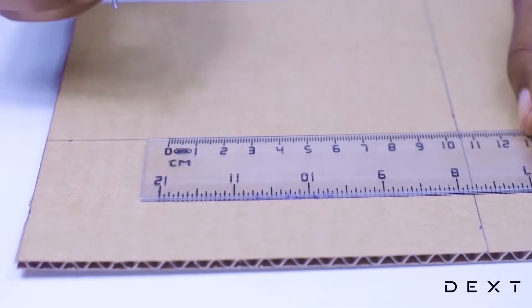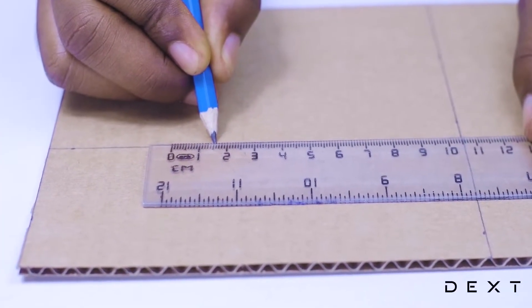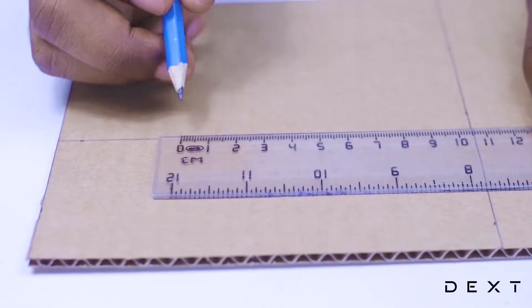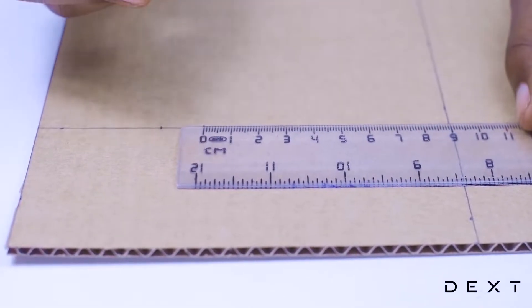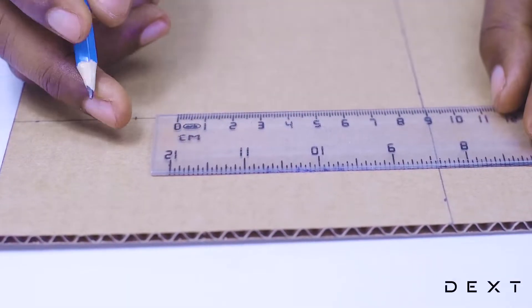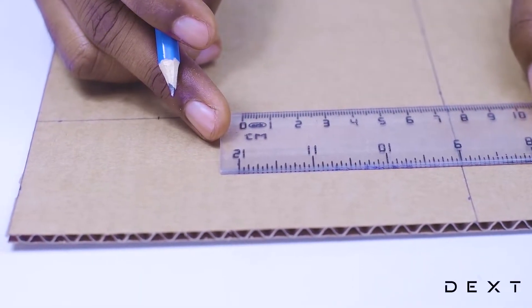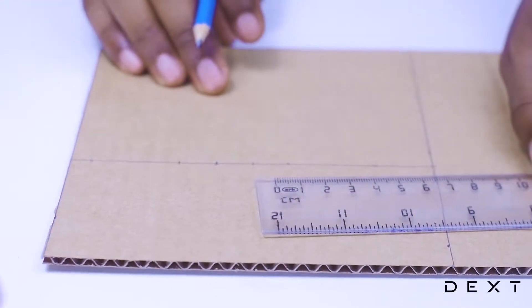After that 4.5 cm, from that point, we will measure 1.5 cm. We are going to measure 2 more of such 1.5 cm. We are going to have 4 points in all.